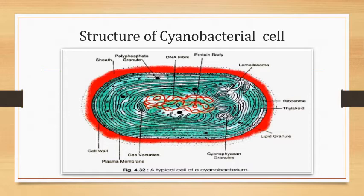The cytoplasm contains some granules known as cyanophycine granules and the genetic material. The photosynthetic apparatus is made up of thylakoids, also known as lamellae, but chloroplast is absent in cyanobacteria. It contains pigments — the main pigments are chlorophyll A and beta-carotene. Phycobiliproteins are also present: phycocyanin (PC) and allophycocyanin (AP). These help in photosynthesis so that they can prepare their food — they are autotrophs. Ribosomes of type 70S are also present, and glycogen serves as storage material for energy.